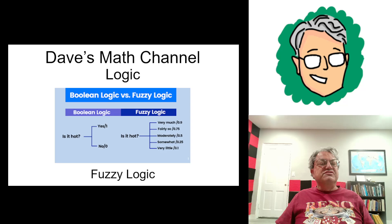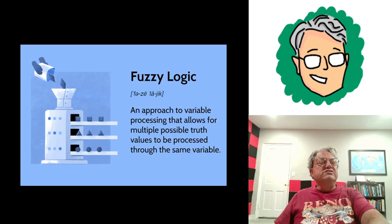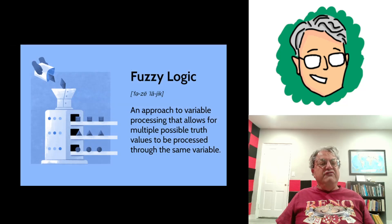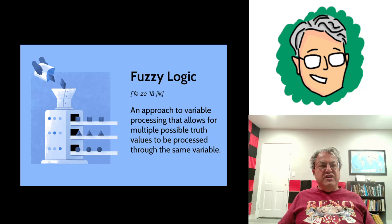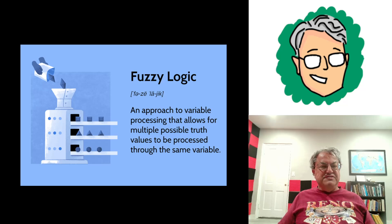This cover slide shows an example of that, which I'll get into later. First we need to define fuzzy logic. Fuzzy logic is an approach to logic that allows multiple possible truth values. In Boolean logic, everything is either true or false. I talked about the liar paradox in a previous video — there are some self-referential statements you can't consistently assign truth values to. But for most of what logic is concerned with, most sentences, you can assign a truth value of either true or false, zero or one.